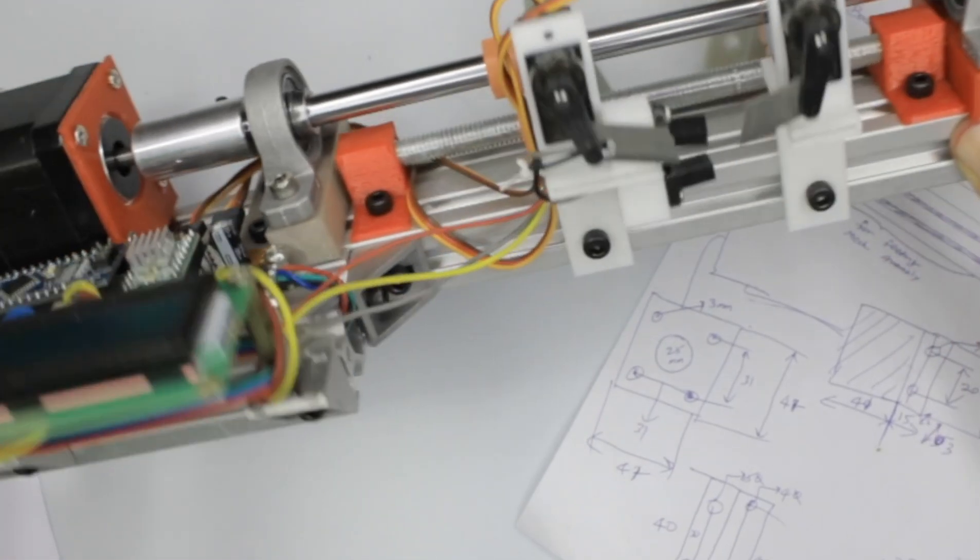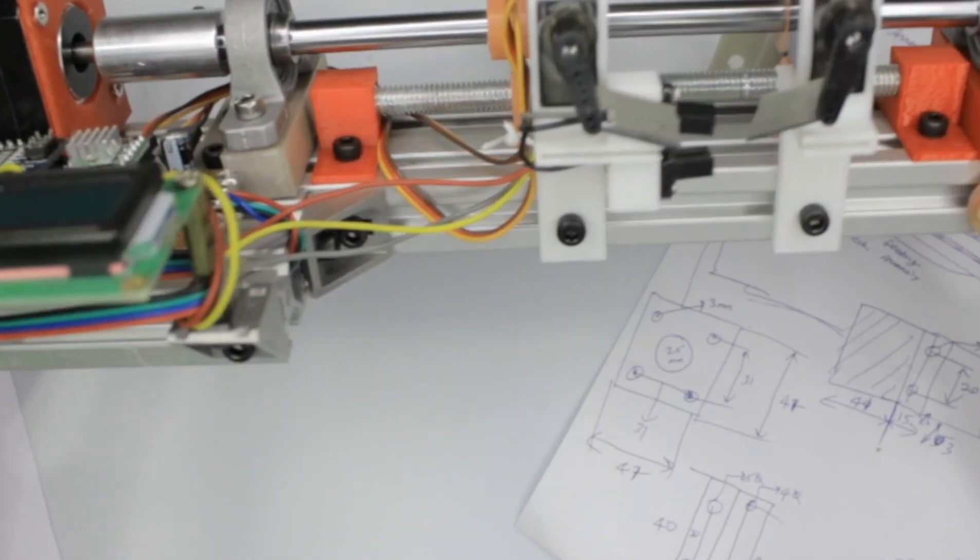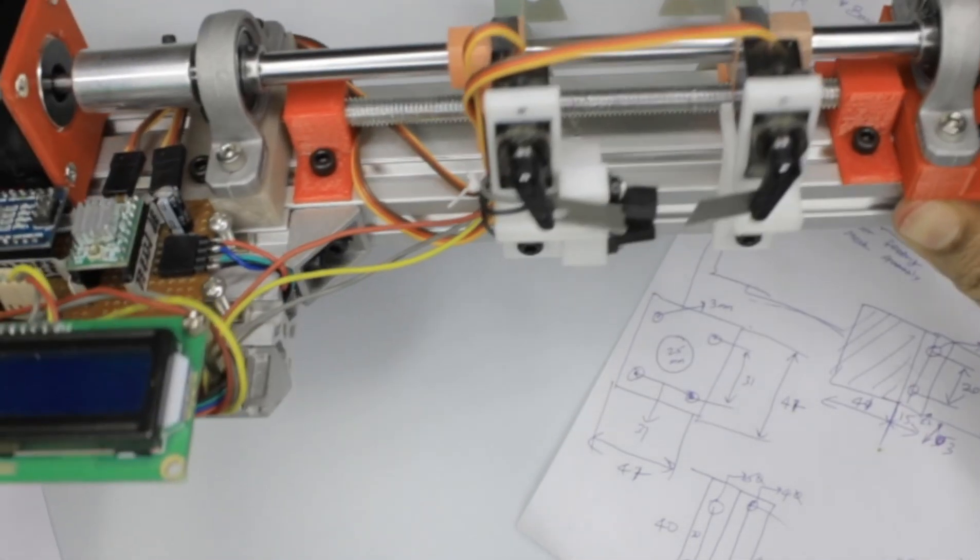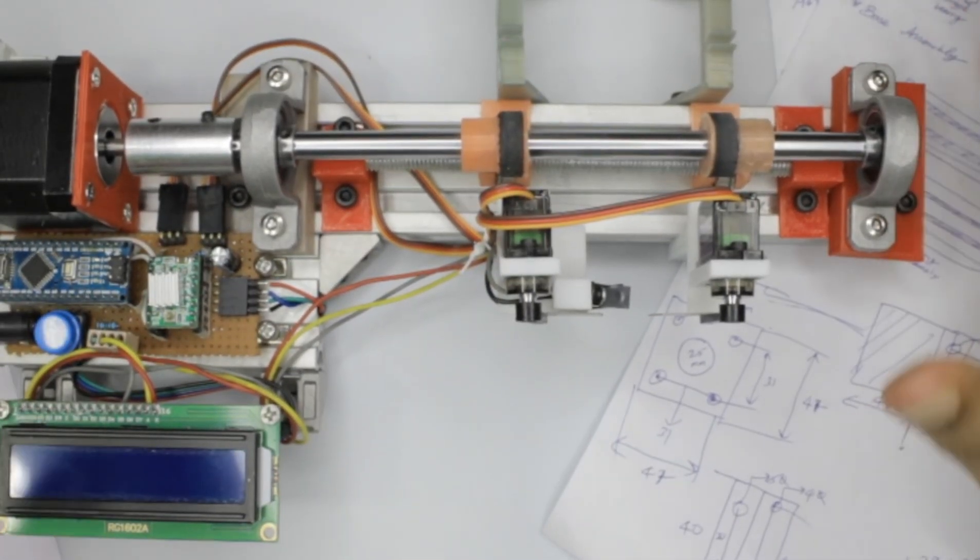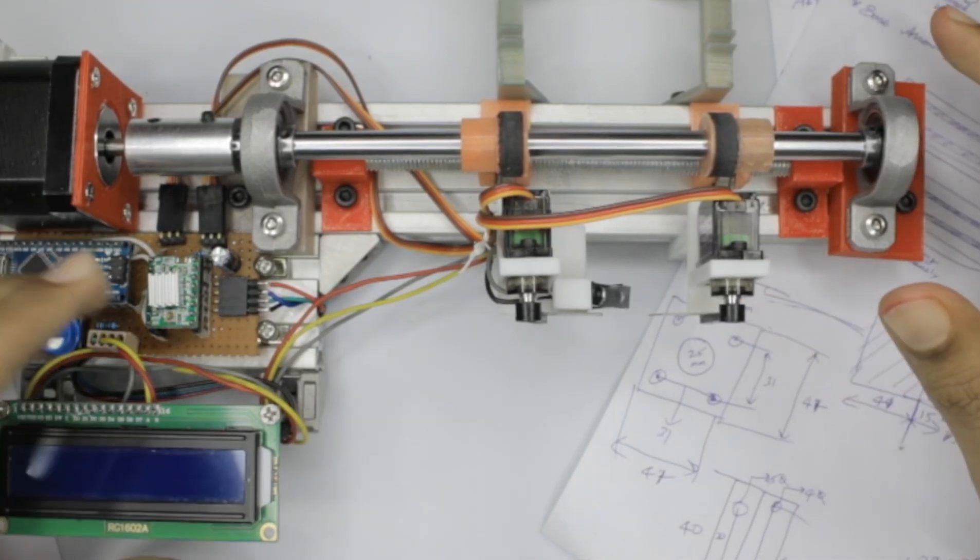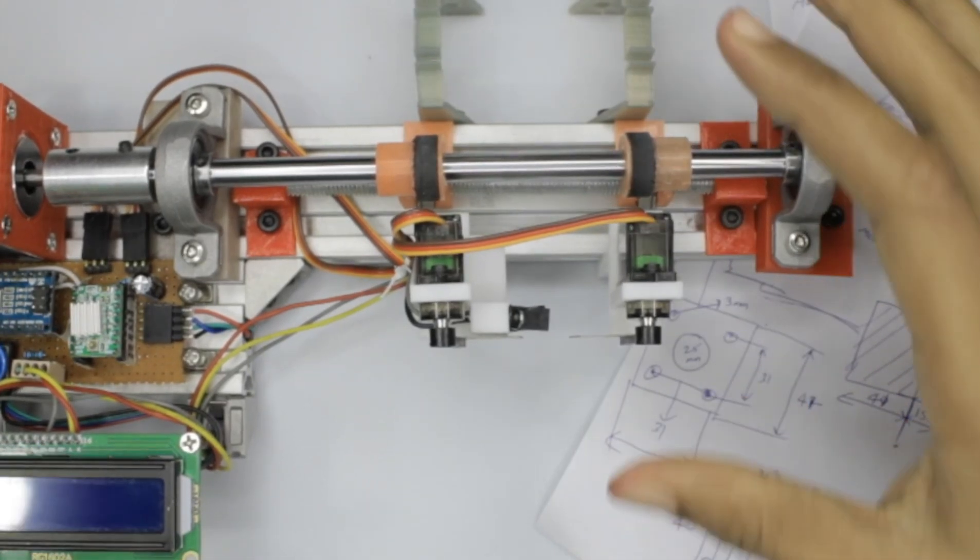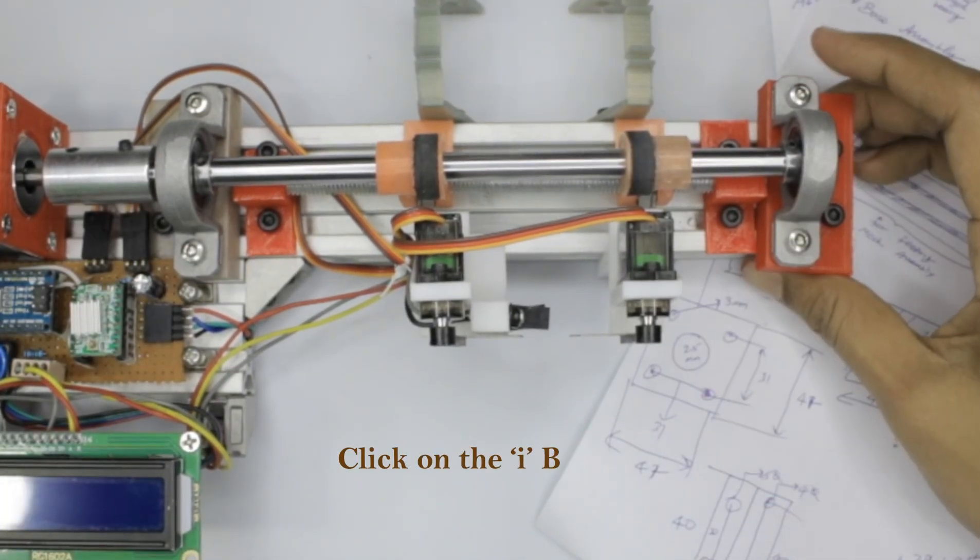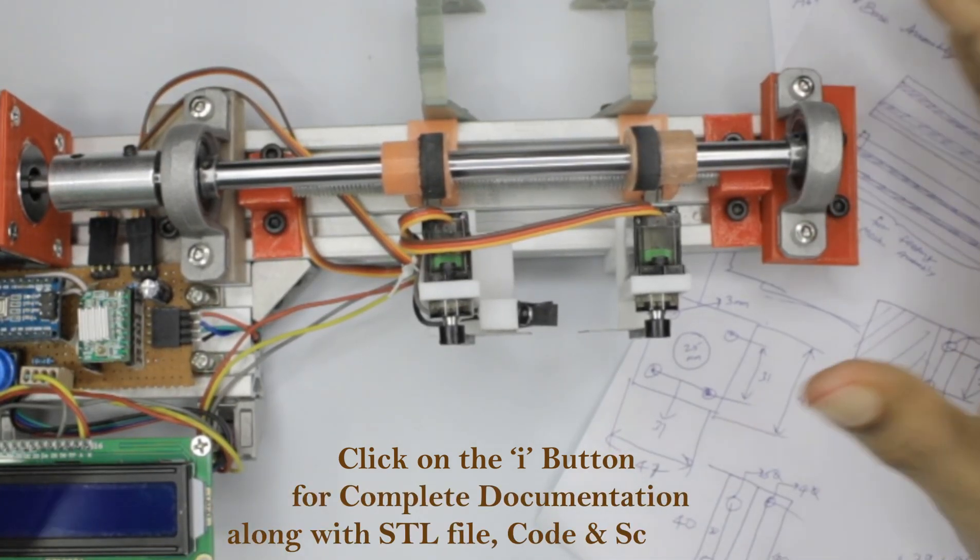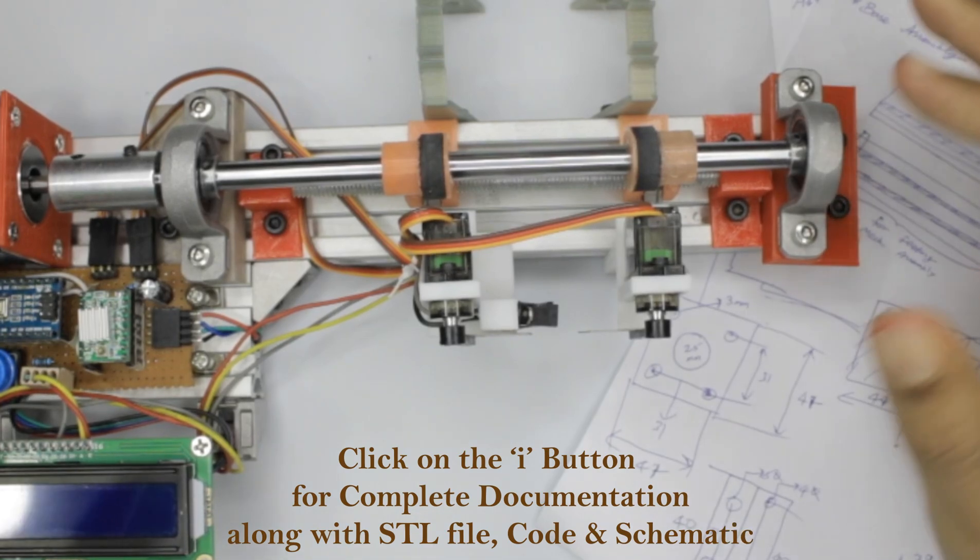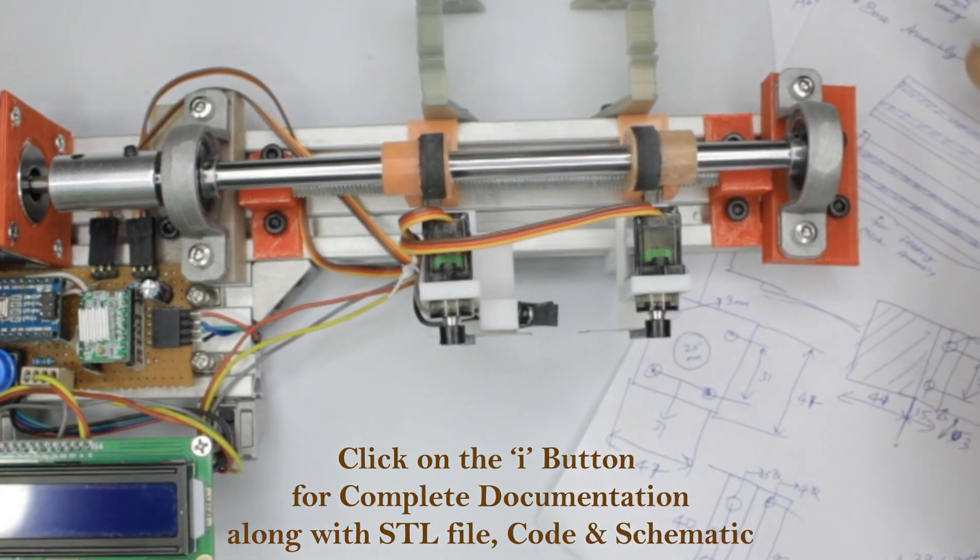I haven't used any power tools whatsoever to build it except for cutting this aluminum frame. The only machine or tool that I used was a 3D printer. As you can see, every single part here is either 3D printed or directly purchased from an online website and assembled here, of course apart from the electronics part.